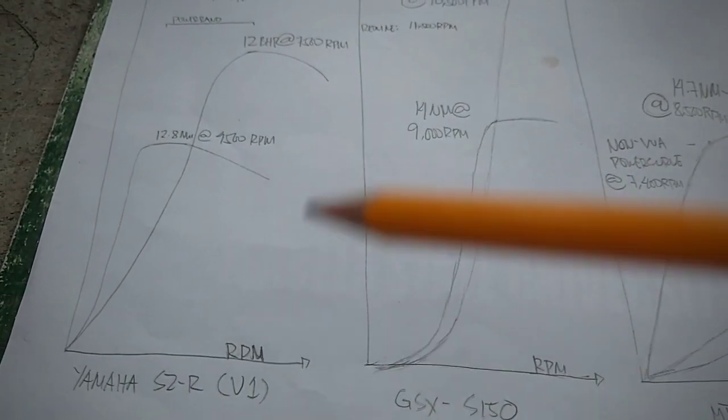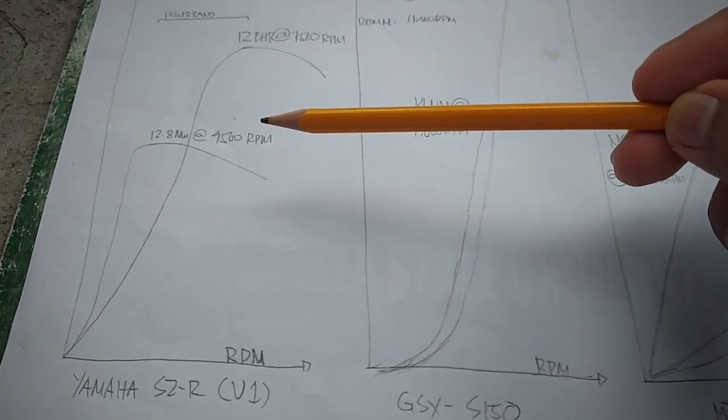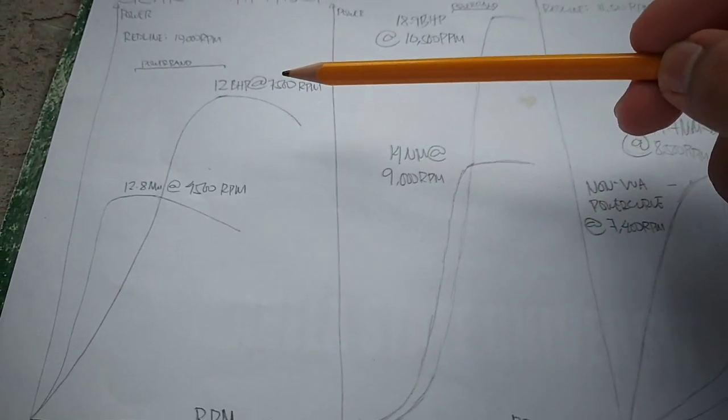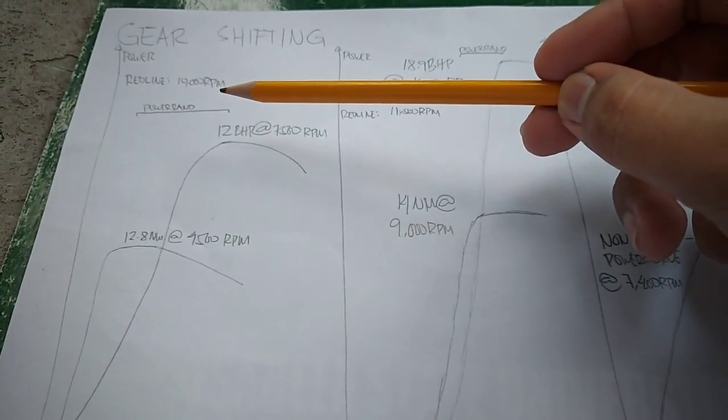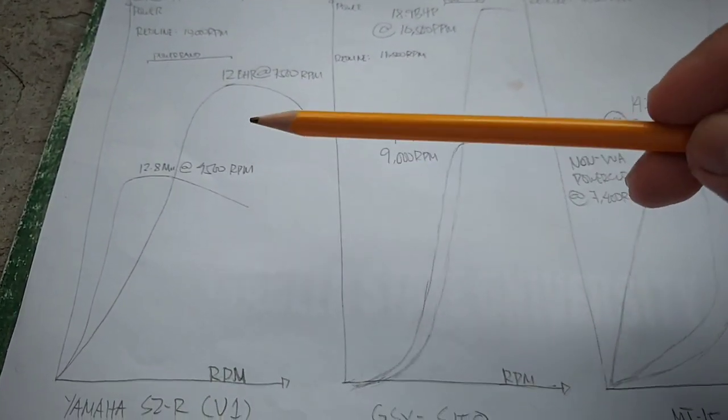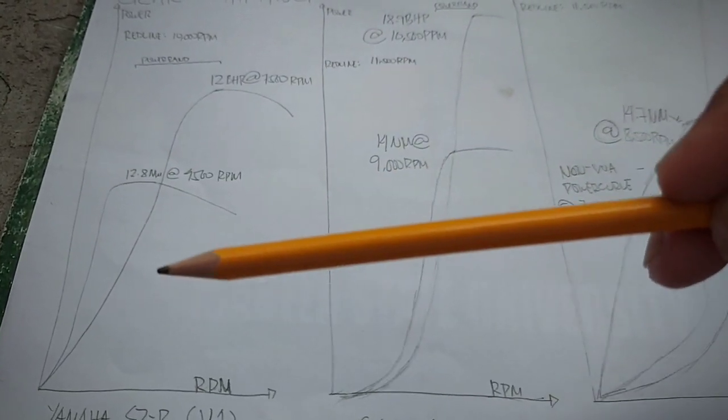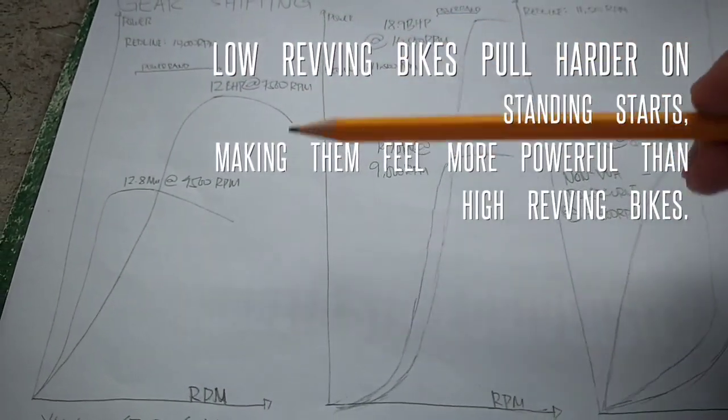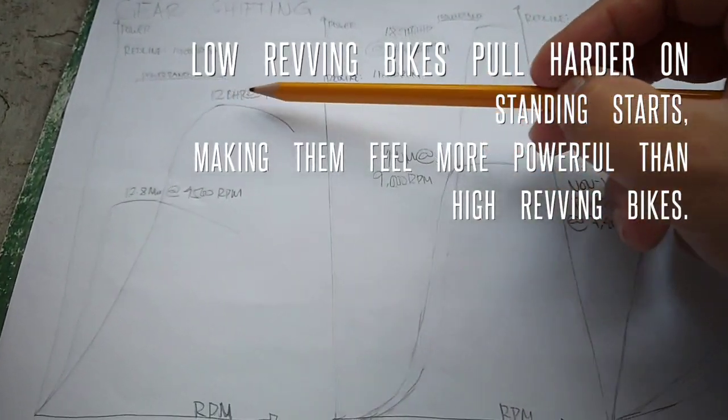So pag inaaral natin ng mabuti yung power curve ng isang low revving na makina, you already have your maximum torque at 4,500 RPM and your maximum power at 7,500 RPM despite yung maximum RPM natin na nasa 10,000 RPM. So if low revving yung motor mo, usually ito yung mga pushrod, mga small bore, long stroke na motor. Malakas sila sa simula and then dun sa upper part ng RPM range na lagpas dun sa optimal RPM, nawawalan sila ng hatak.